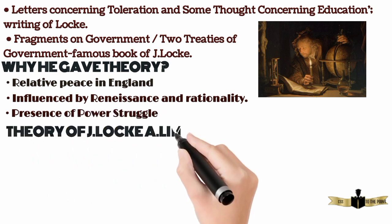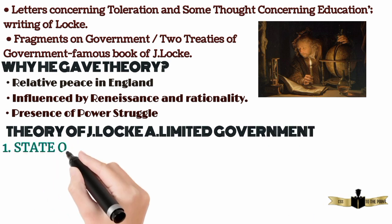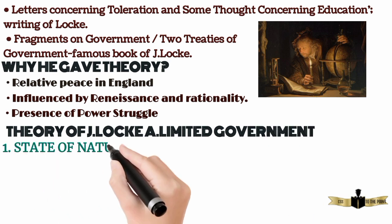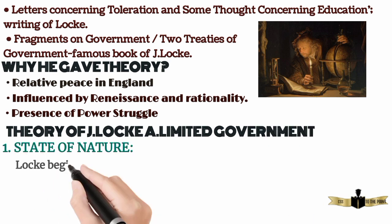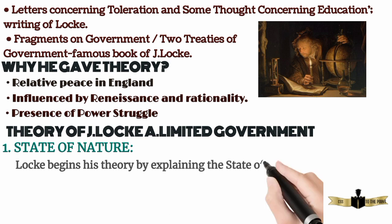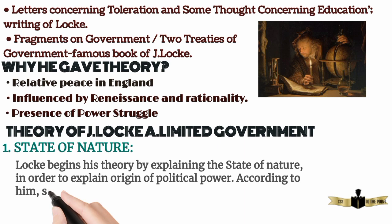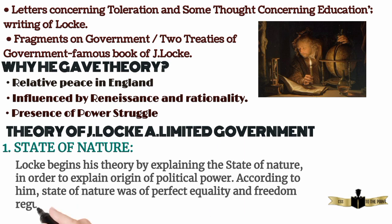Theory of John Locke: A. Limited Government. A. State of Nature. Locke begins his theory by explaining the state of nature in order to explain the origin of political power. According to him, the state of nature was one of perfect equality and freedom, regulated by laws of nature.